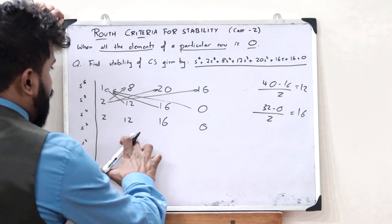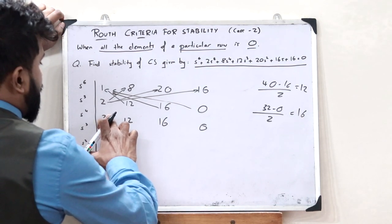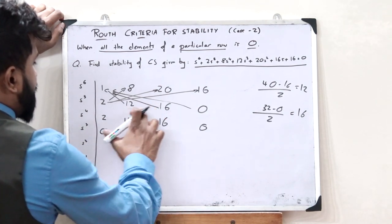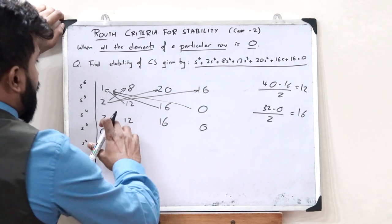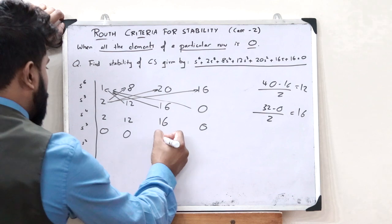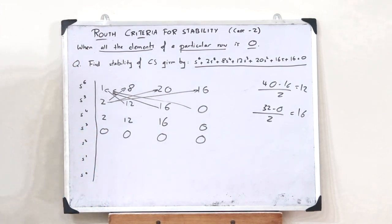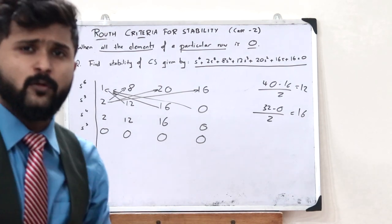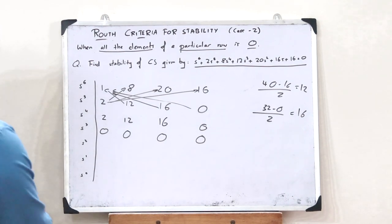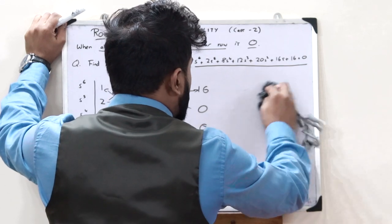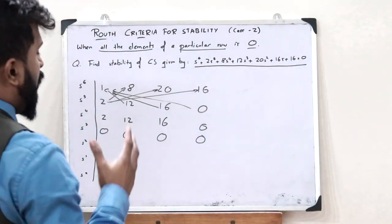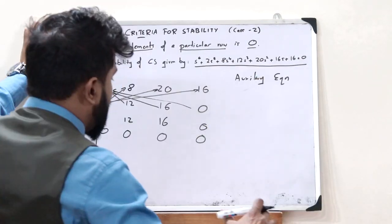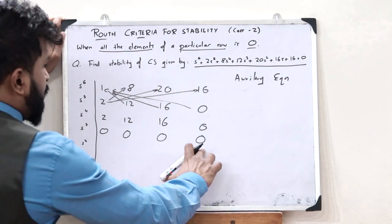Now finding the elements of the s³ row: (2×12 − 2×12)/2 = 0, (2×16 − 2×16)/2 = 0, and (2×0 − 2×0)/2 = 0. So all terms in the s³ row are zero — this arises a contradiction that cannot be solved by any method we know. This is when we use the auxiliary equation.